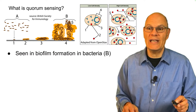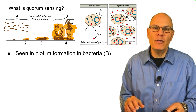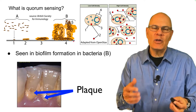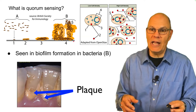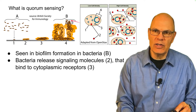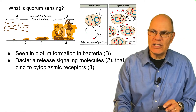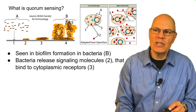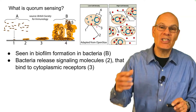Quorum sensing is a kind of cell communication seen in biofilm formation in bacteria. These biofilms can form on your teeth, for example, leading to the buildup of plaque. What happens is that bacteria — a single cell — release signaling molecules, and those bind to cytoplasmic receptors, which are receptors actually inside the cell, not on the membrane surface.